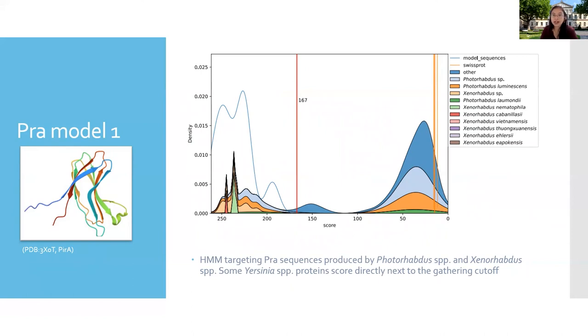Another example is from this model targeting the PRA toxin produced by photorhabdus and xenorhabdus. Interestingly, you can see here that some proteins from Yersinia scored directly below our trusted cutoff. It has been reported that Yersinia shares insecticidal potential with photorhabdus luminescence, as homologous proteins with similar genetic arrangement has been found, perhaps as a result of horizontal gene transfer events. The sequences over here might represent related variants of the PRA toxin. Moreover, this PRA toxin is part of a two-component toxin. We observe a similar distribution for the model targeting the B component of the toxin, meaning that perhaps Yersinia is able to produce the A and B elements of the toxin. This kind of scenario opens the door to ask questions about the evolutionary processes that shape a protein class and how toxins develop.